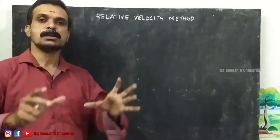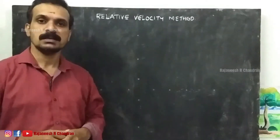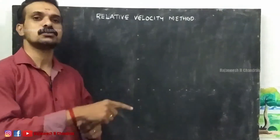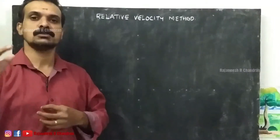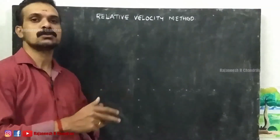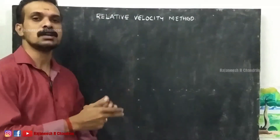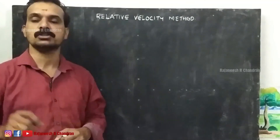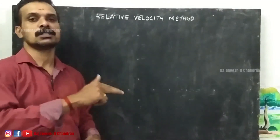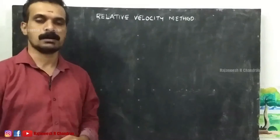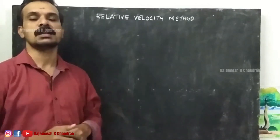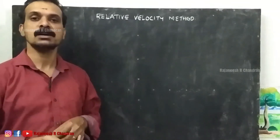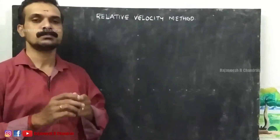Whenever two bodies are moving, there will be a velocity of the first body with respect to the other body. That velocity is known as the relative velocity of body 1 with respect to body 2. The relative velocity can be obtained by the vector difference of the two velocity vectors.